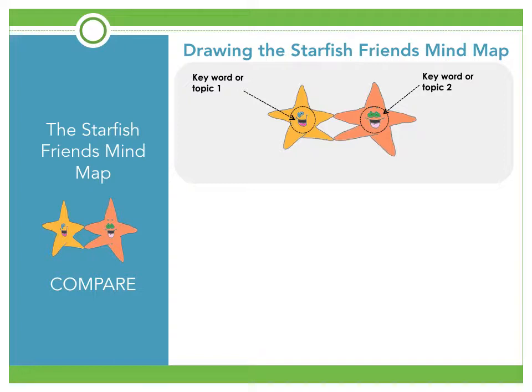These are the two topics that learners are going to compare. When asking learners to compare, there are two things they're looking for. First, similarities — how are the two topics the same or similar — and these are placed in the arms that are touching, showing a shared characteristic. Second, learners need to find the differences: how is topic one different from topic two.